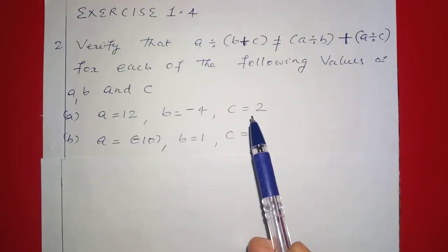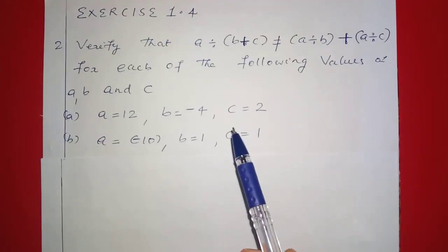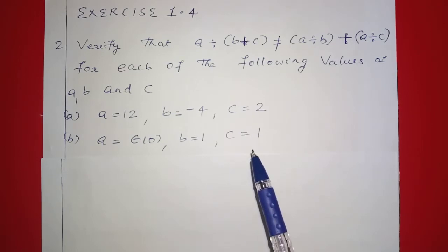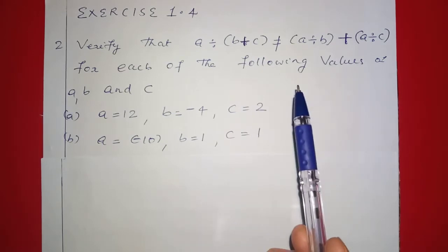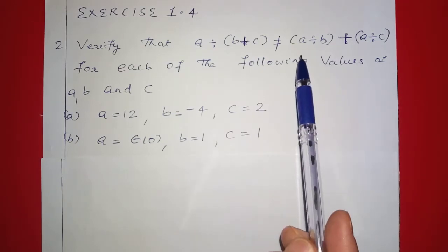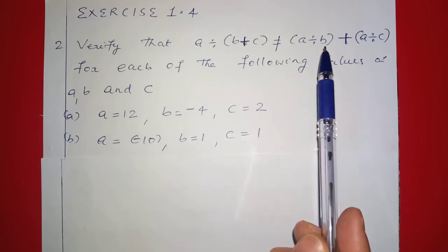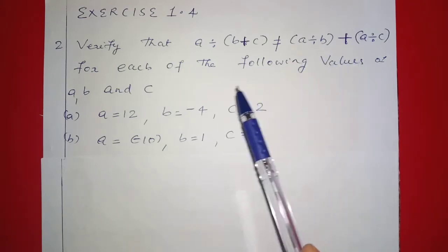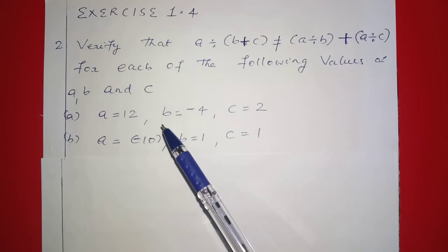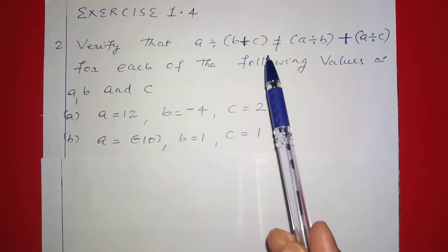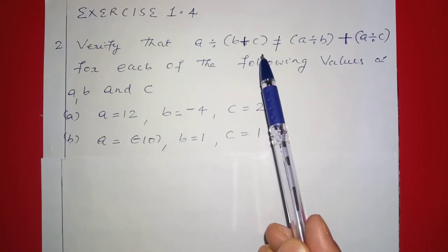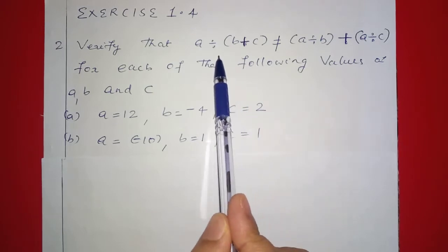For each of the following values of a, b, and c, verify that a division (b plus c) is not equal to a division b plus a division c. This is division distributivity.